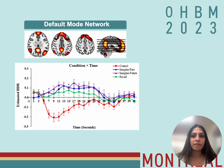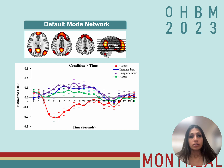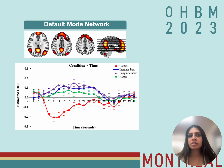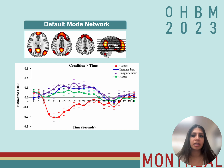Using fMRI-CPCA, we were able to derive four components, which we then classified into networks. One component was classified as the default mode network, which has previously been demonstrated to be involved when people are thinking about the past, present, or future. This characterization was evident in our results, as this network shows activation when participants are recalling past events or imagining future events.